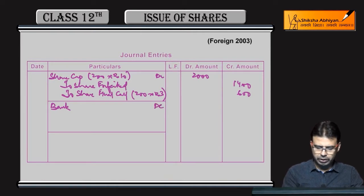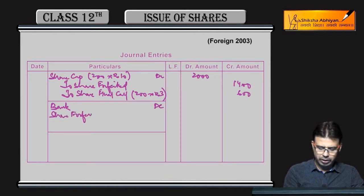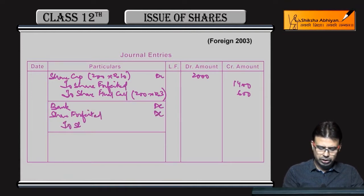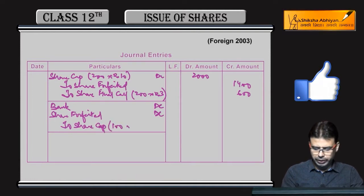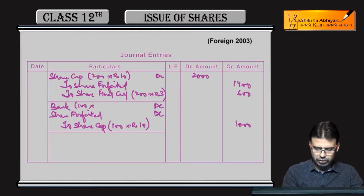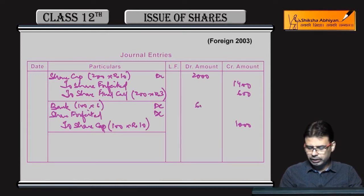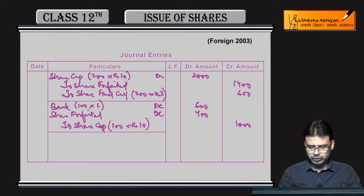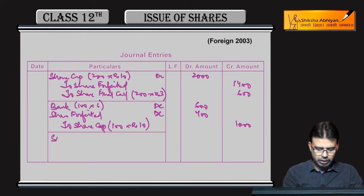Ab reissue kar toh bachcho: bank debit, share forfeited debit, to share capital. 100 shares reissue kar rahe hain fully paid up 10 rupees — 1000 rupee ke huay hain, jabki sirf 6 rupee mein reissue kar rahe hain at a discount of 4. Iska matlab hum 6 rupee mein reissue kar rahe hain toh 400 rupee forfeited mein aa gaya hai, aur kyunki ye partial reissue ka case hai.